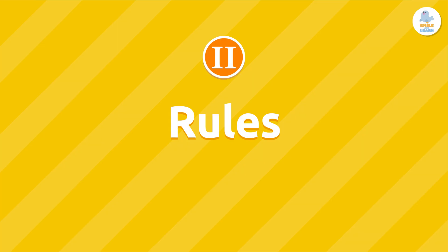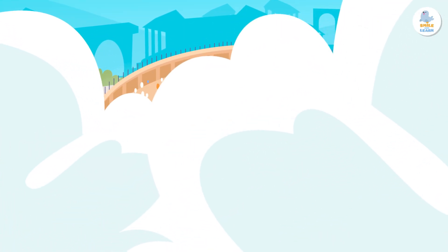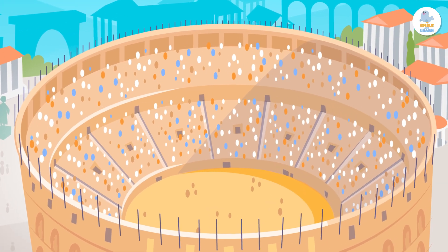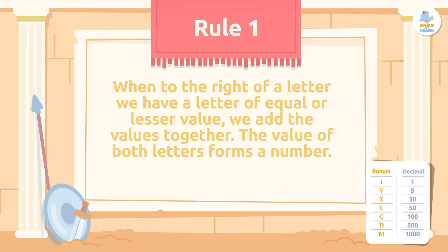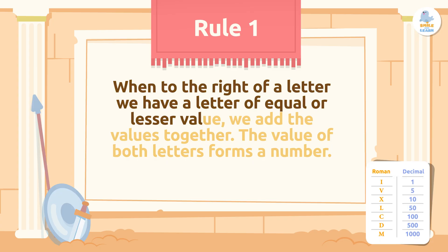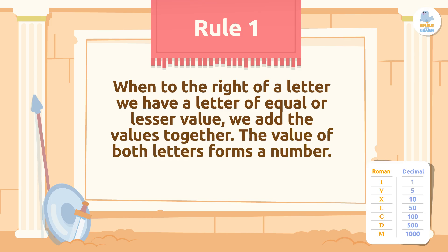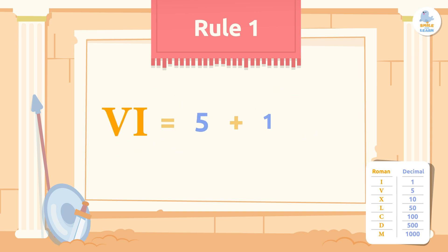Now let's look at the different rules for writing Roman numerals correctly. Rule 1: when to the right of a letter we have a letter of equal or lesser value, we add the values together. The value of both letters forms a number. Let's see how this works with the example from before — the letters VI represent the sum of 5 plus 1, which equals 6.